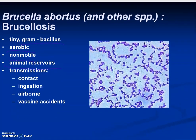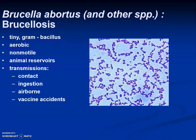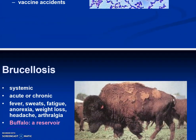Let's move on to Brucella abortus, the first pathogen in this group, which causes brucellosis. It's a tiny gram-negative bacillus, aerobic, non-motile. There are animal reservoirs — bison, for example. Transmission occurs by direct contact, ingestion, airborne routes, or even vaccine accidents.